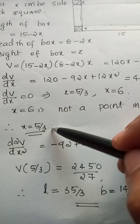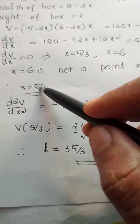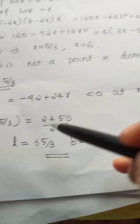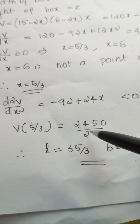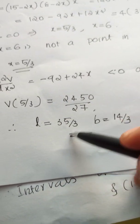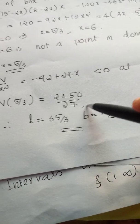So x = 5/3. The second derivative d²V/dx² at x = 5/3 is less than 0, so this is a maximum. Length = 35/3, which equals 14 by 3.